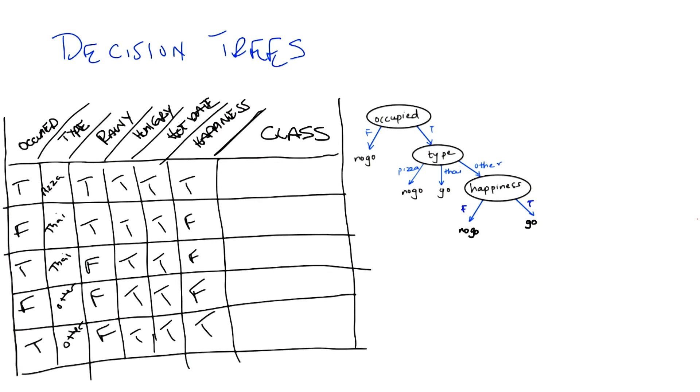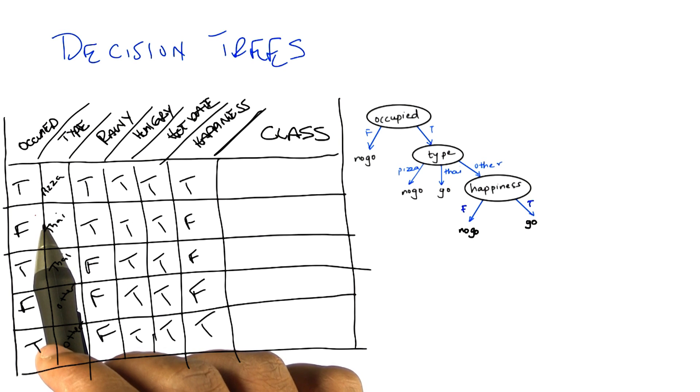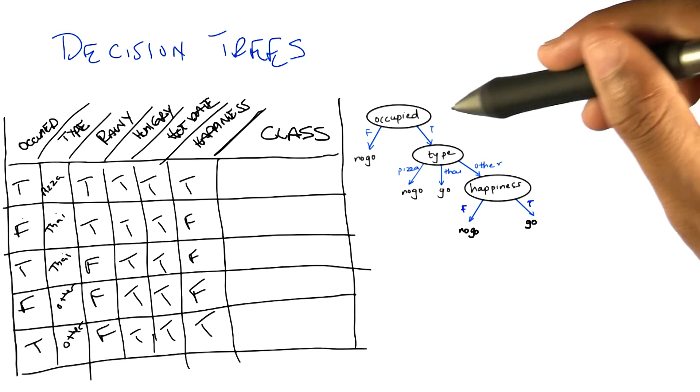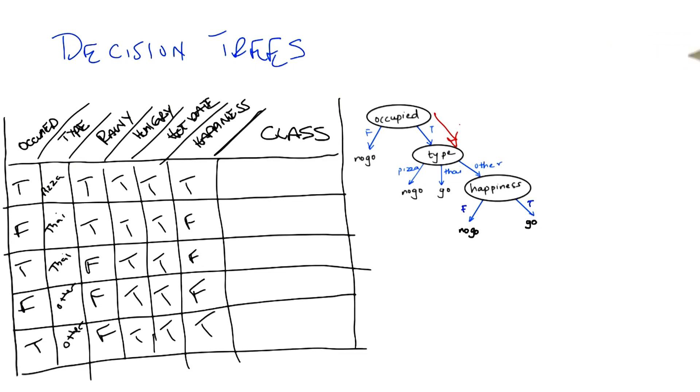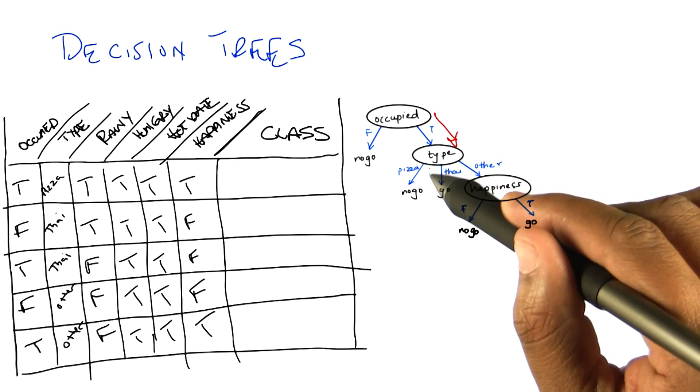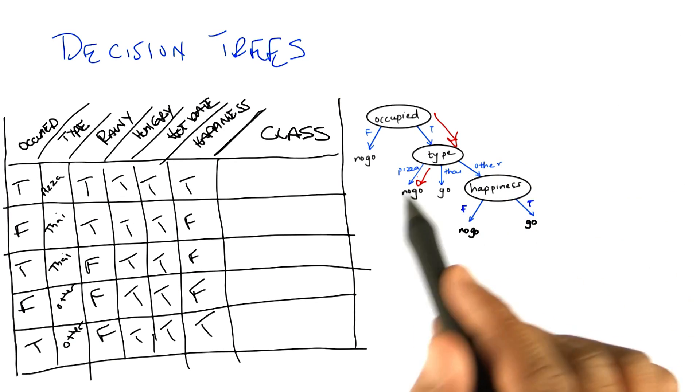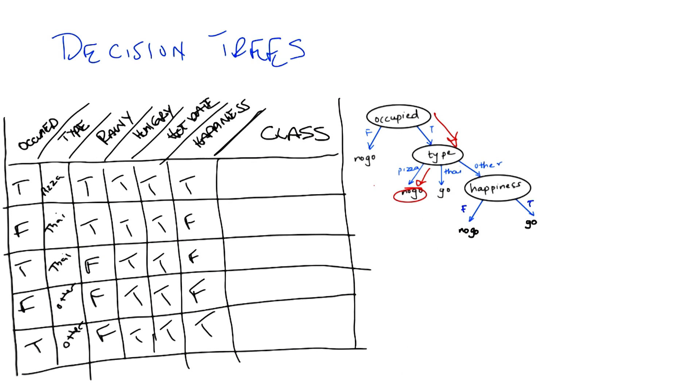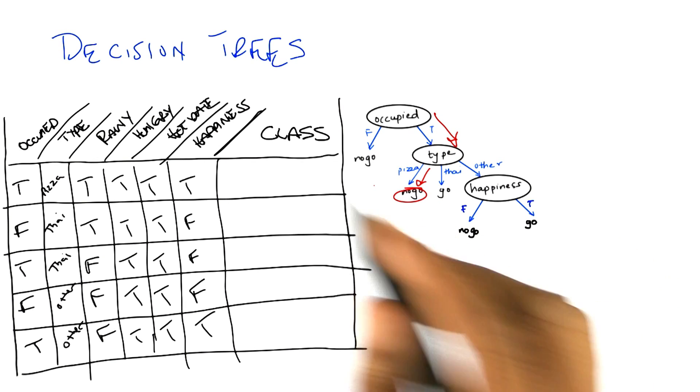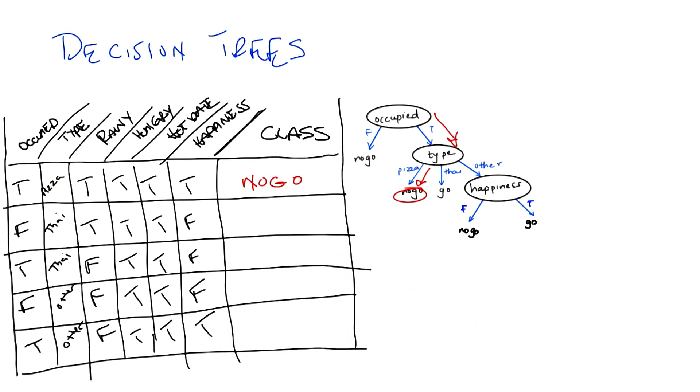So in the first case, we have true for occupied, which means we want to go down the right side of the tree and check on the type. In the first case, the type is pizza, and so we go down the first branch, and that means we do not go. So the output is no go.